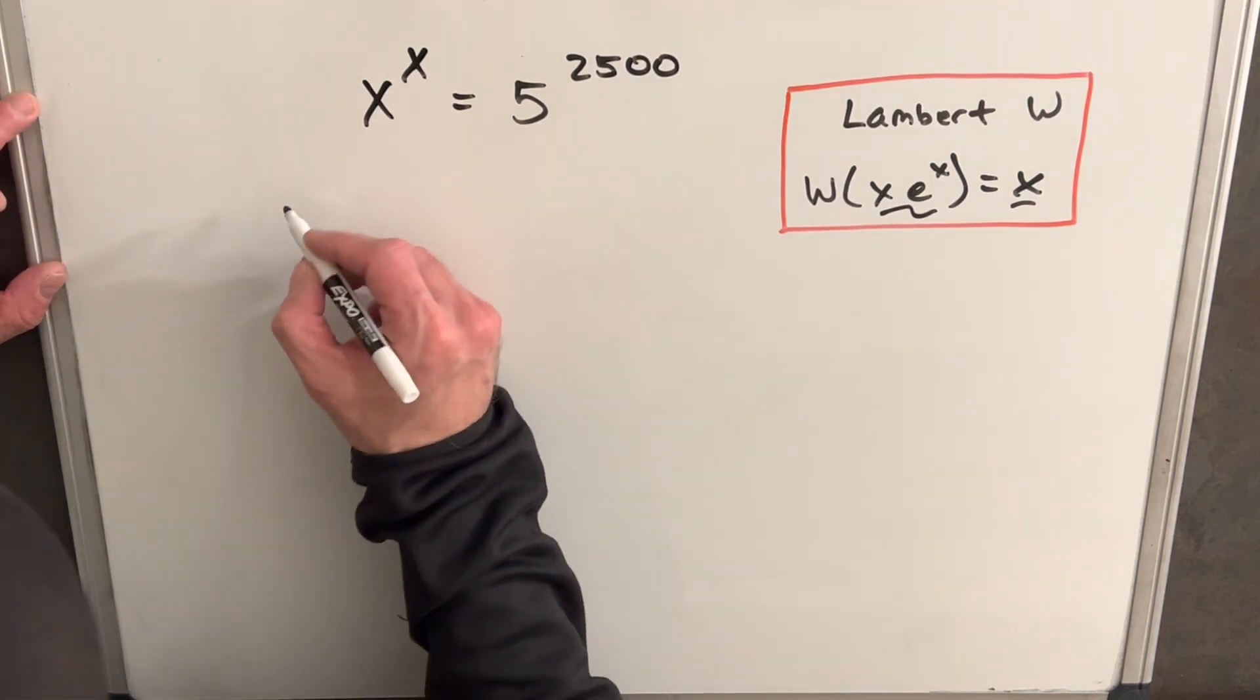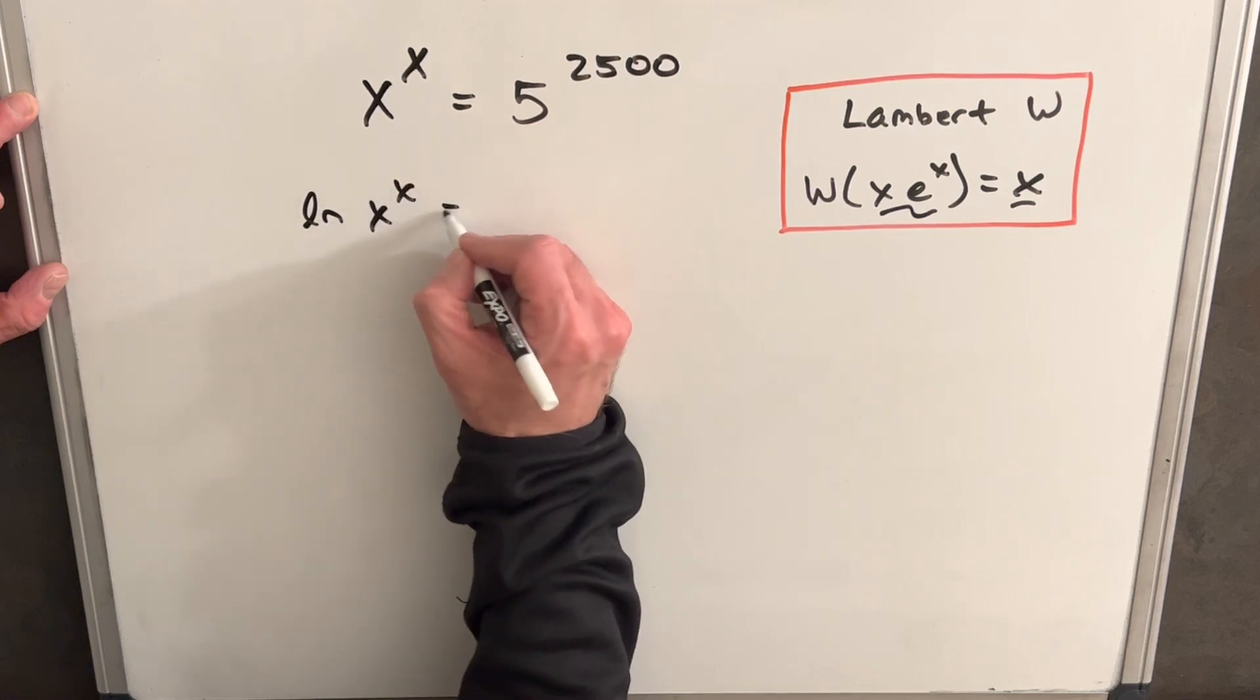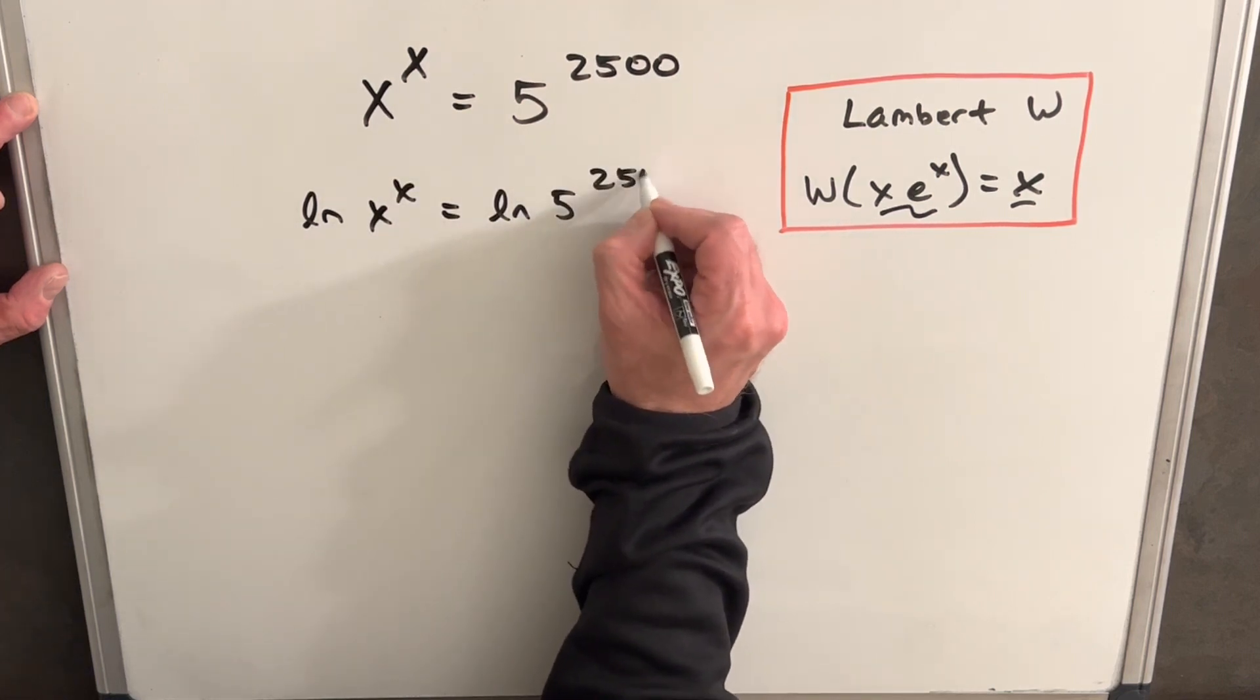Okay, to start with, what I'm going to do, let's take the natural log on both sides. We're going to have natural log of x to the x equals natural log of 5 to the 2,500.